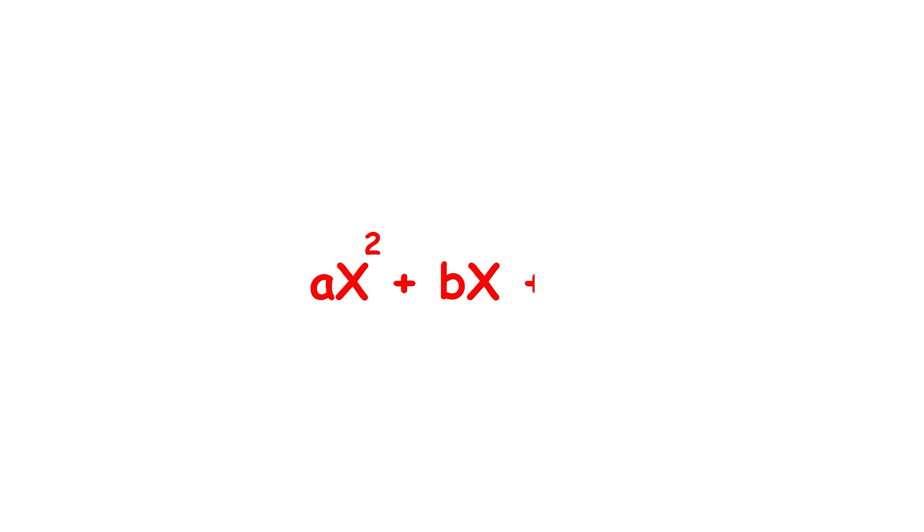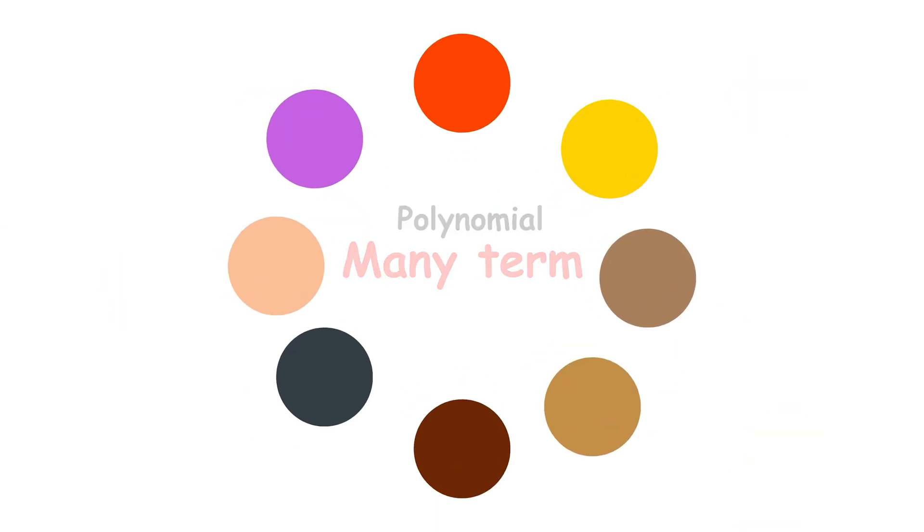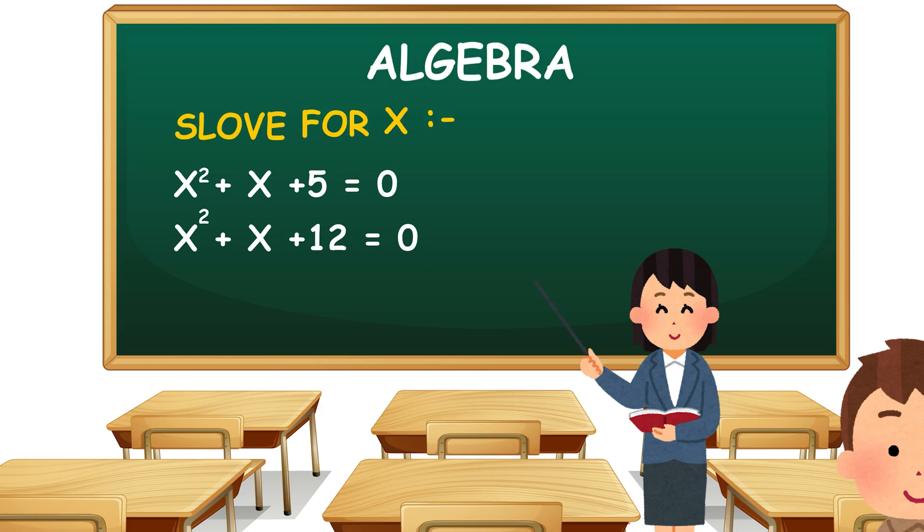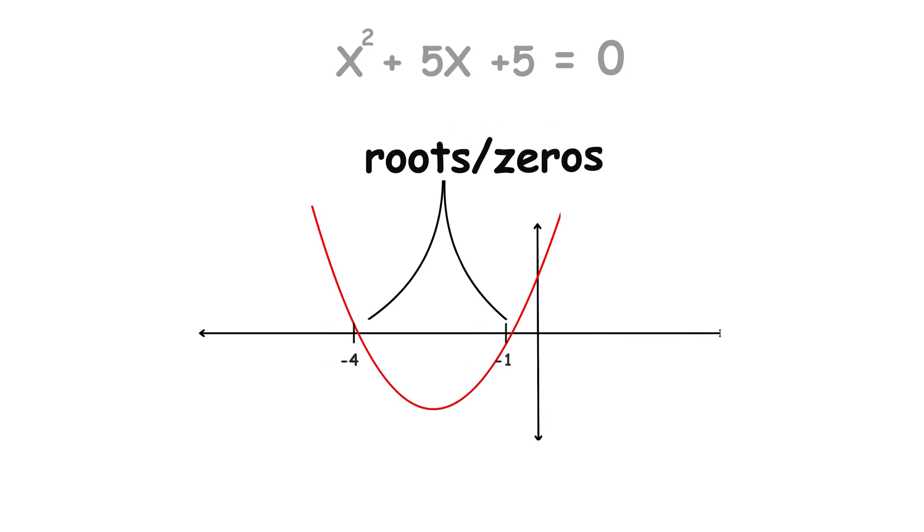The expression ax squared plus bx plus c is called a polynomial, meaning many terms, where the terms are the things being added together. In particular, a polynomial of this form is called a quadratic polynomial, and a quadratic equation is about finding the values of x where a quadratic polynomial is equal to 0, the roots, or zeros, of the polynomial.